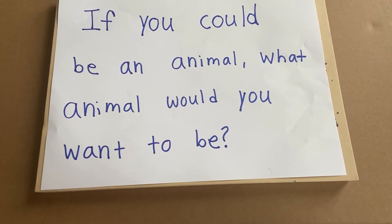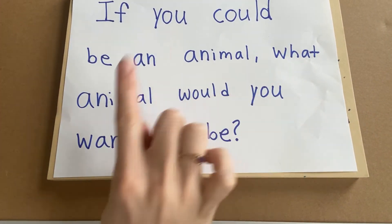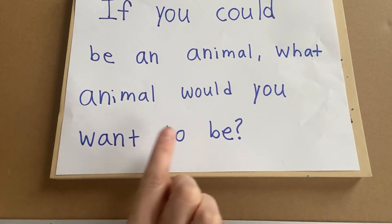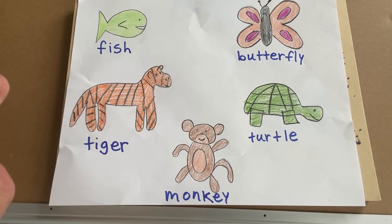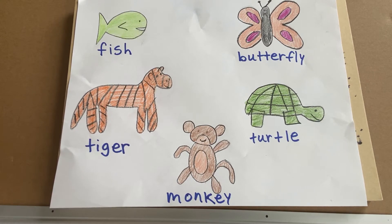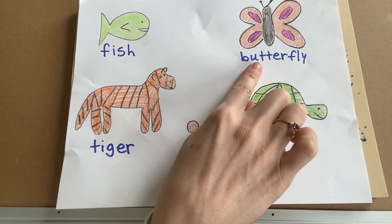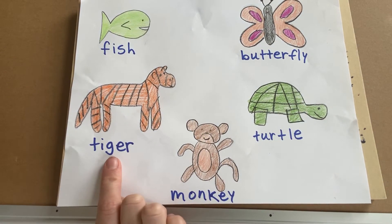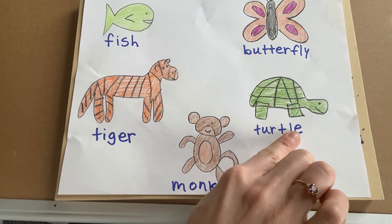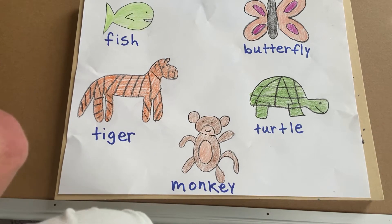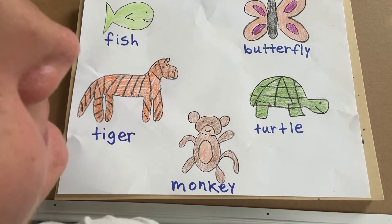Our writing prompt for today is: if you could be an animal, what animal would you want to be? Let's look at some ideas of some animals that you might want to be. Maybe you want to be a fish, a butterfly, a tiger, a monkey, or a turtle. Or maybe you want to be something that's not pictured here — you can think of whatever animal you want to be to write about.